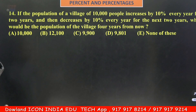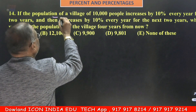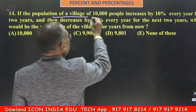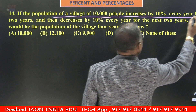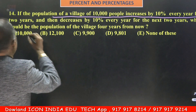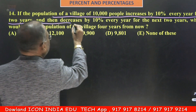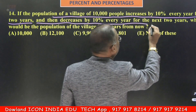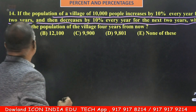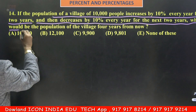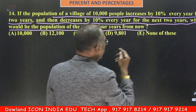If the population of a village of 10,000 people increases by 10% every year for 2 years and then decreases by 10% every year for the next 2 years, what would be the population of the village 4 years from now?